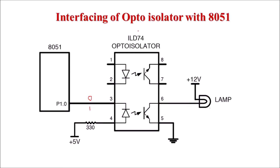The IC used here is the ILD74 optoisolator. It has two pairs of optoisolators, so we can connect two different devices through this single optoisolator IC.